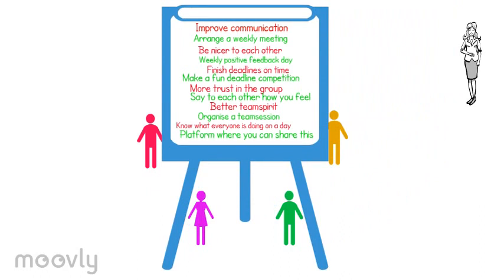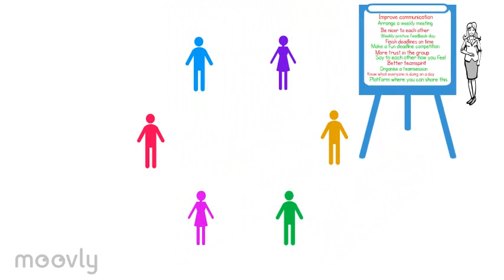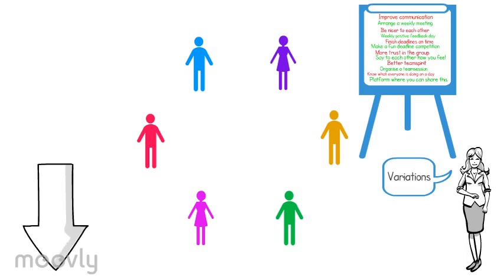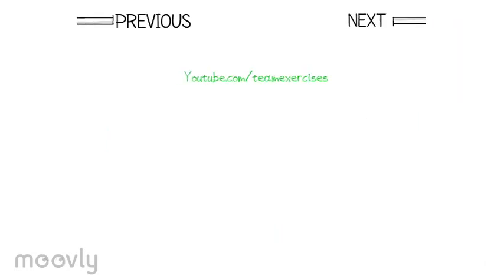The team will see exactly what they can do to improve. The trainer guides the team and applies variations. What kind of variations you can read below this video on YouTube. And haven't you subscribed yet? Click on the subscribe button to stay tuned for a new team exercise each Sunday.